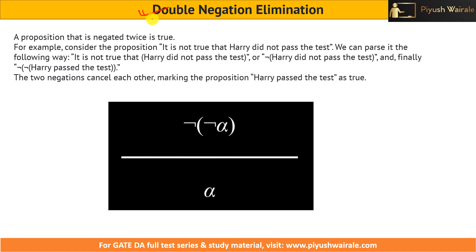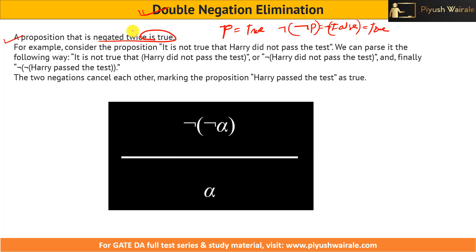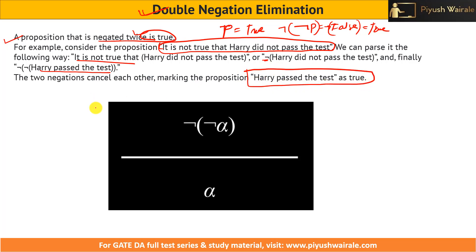Next is double negation elimination. We already discussed this in the equivalence rules, but let us revisit. A proposition that is negated twice is true. Suppose P is true; negation of P is false; negation of negation of P is true again. For example, consider the proposition 'it is not true that Harry did not pass the test.' The two negations cancel each other, so we conclude Harry passed the test. Two negations cancel each other — this is called double negation elimination.